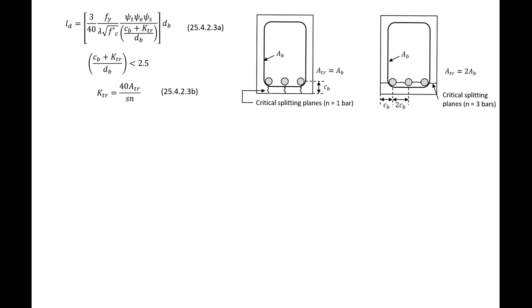Next we'll use the ACI detailed expression for development length. To use this, we need to find a couple of additional terms: CB, which is related to where our critical splitting plane is, and KTR, which is related to the amount of steel that crosses the splitting plane or failure crack.